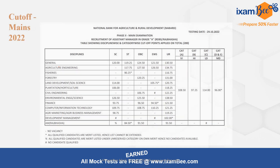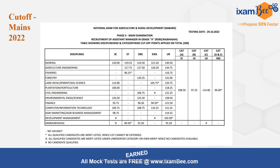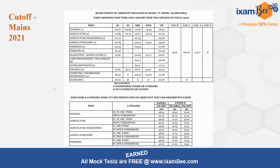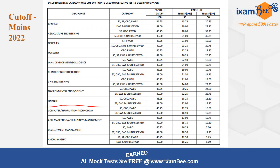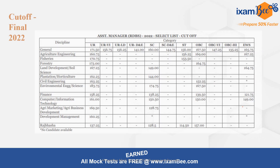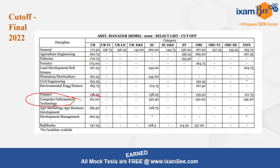For mains, Paper 1 is descriptive English and Paper 2 has objective and descriptive from the specialized stream. The overall mains cutoff for Computer and Information Technology in 2022 was 121.25 out of 200 — comprising a 100-mark descriptive English paper, a 50-mark IT specialist objective, and a 50-mark descriptive section. The cutoff for mains in 2021 was 112.58. For 2022, Paper 1 cutoff was 49, Paper 2 objective was 16.50, and Paper 2 descriptive was 19.25.